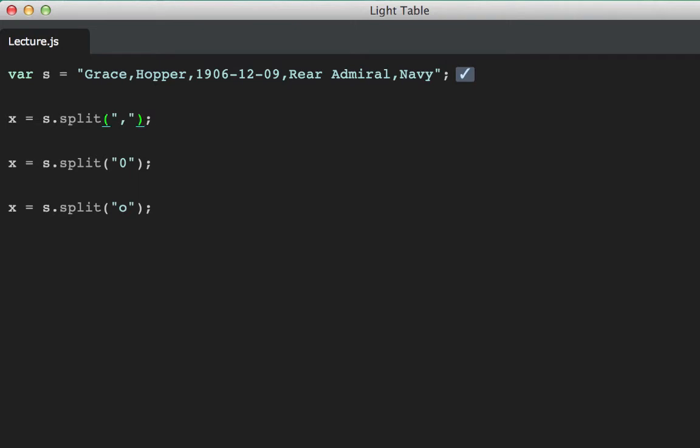If we split along commas, we should expect one, two, three, four, five elements in the resulting array. And we do. Grace, Hopper, her birthdate, rear admiral, and navy. Note that the commas are not part of the strings. The delimiter has been omitted in this case.